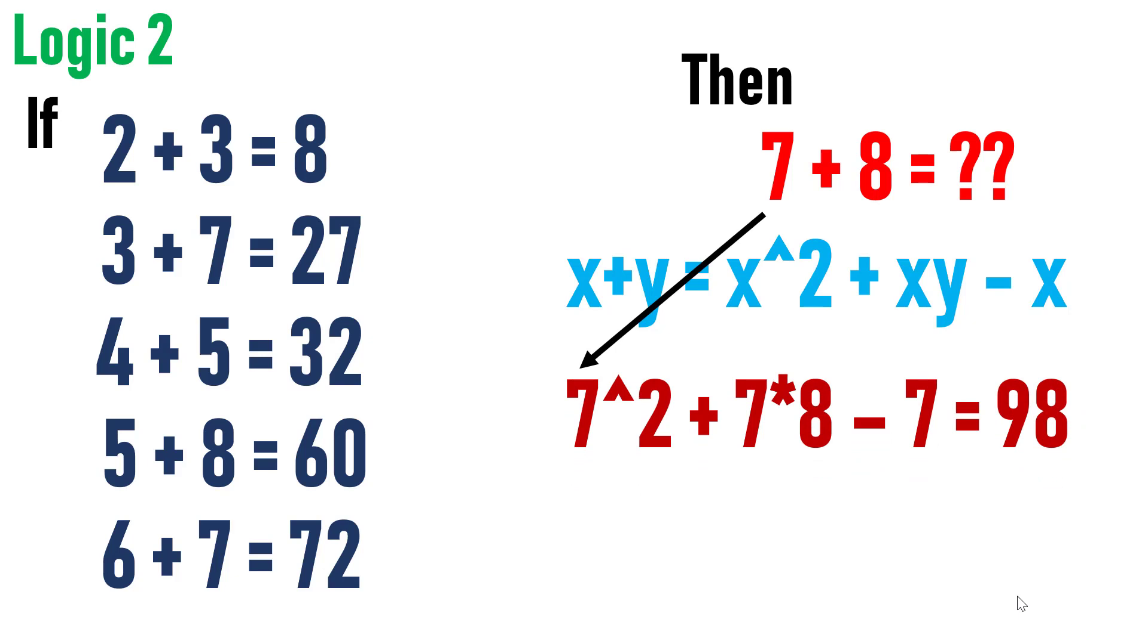The square of the first number is 49 plus product of two numbers, that is 7 into 8, 56 minus first number is 7, which will yield 98. So in both the logic, the result is seen.